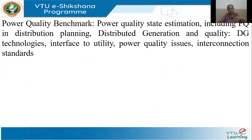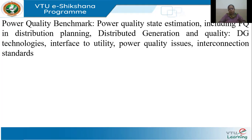Estimation means: I have some data — past data, present data — and with it I estimate values for which I don't have measurements. We will see how power quality has to be included in planning of the distribution system. Today we have a lot of distributed generation — small generation spread on the distribution side. We'll look at popular technologies for interfacing with the utility and the major power quality issues and interconnection standards.